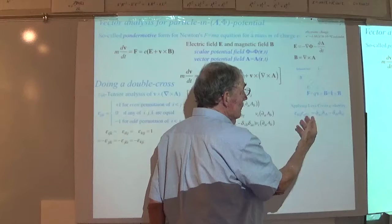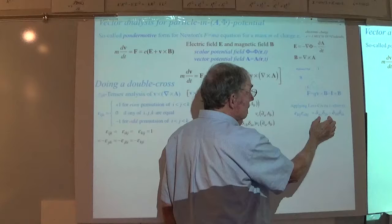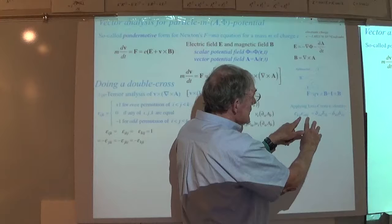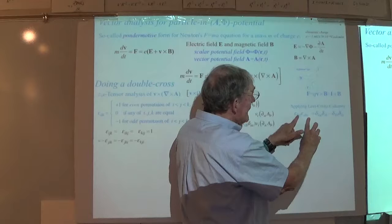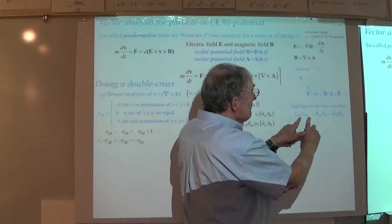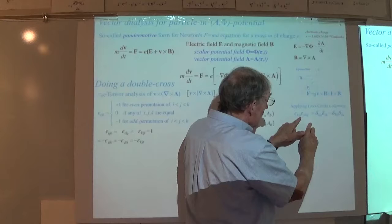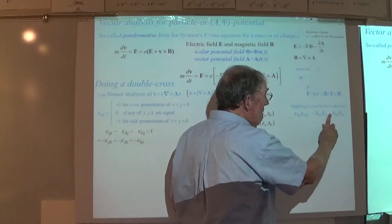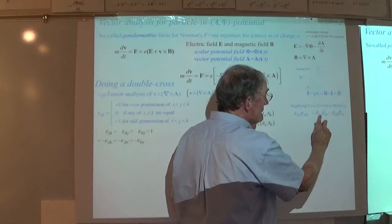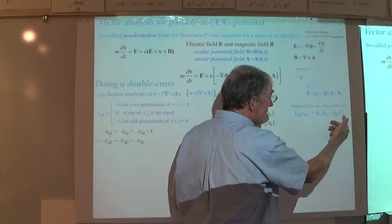This is an easy thing to prove in three dimensions because there are only so many things you can write out. The form is interesting: you take one index from each epsilon — say the last indices — and you get a term involving K and A together, and I and B together, then subtract the one where A and B switch places.